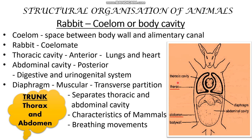So, the body cavity has two parts: thoracic cavity, which is anterior, and abdominal cavity, which is posterior. In the thoracic cavity, lungs and heart are present. In the abdominal cavity, the digestive system and urinogenital system are present.